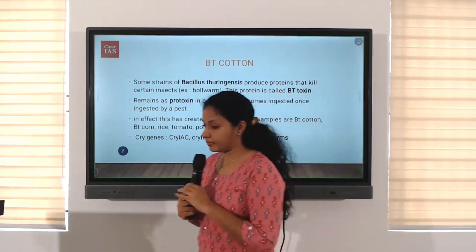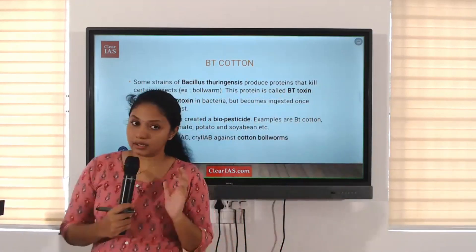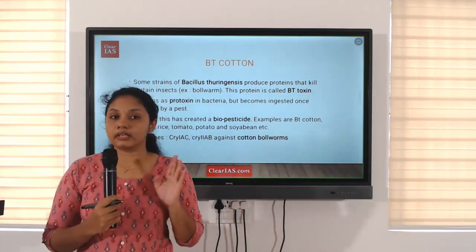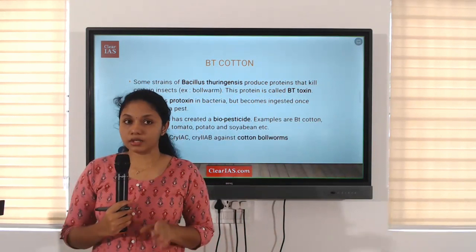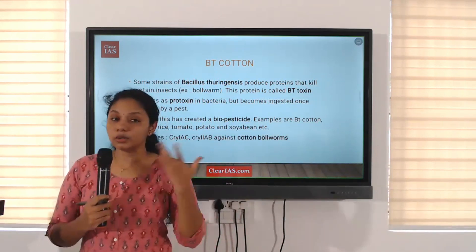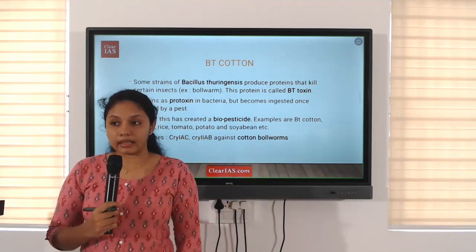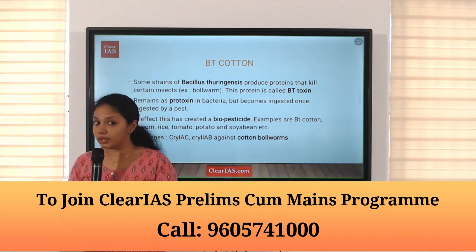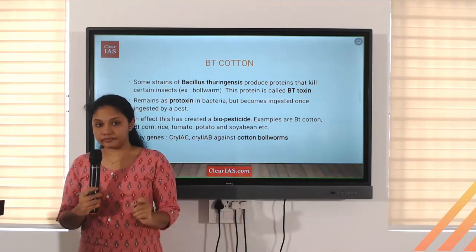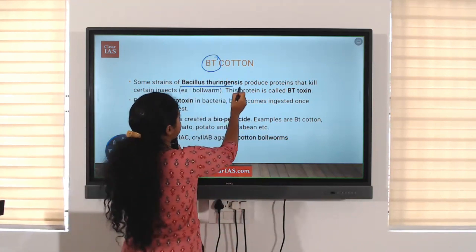The next one is BT cotton. This is the only genetically modified crop which is commercially cultivated in India. There are many genetically modified crops you will be hearing about, but you should always keep in mind that BT cotton is the only one which has permission to be commercially cultivated. BT in BT cotton stands for Bacillus thuringiensis.